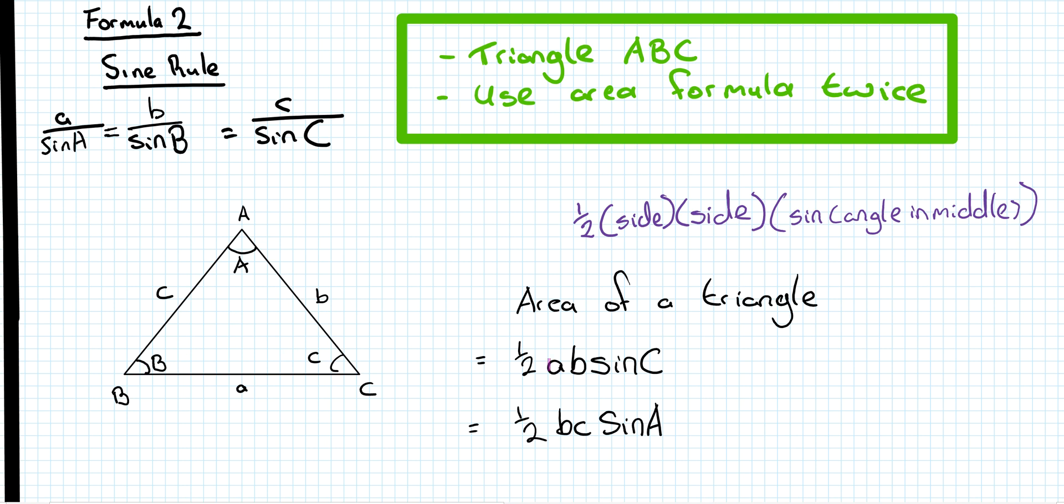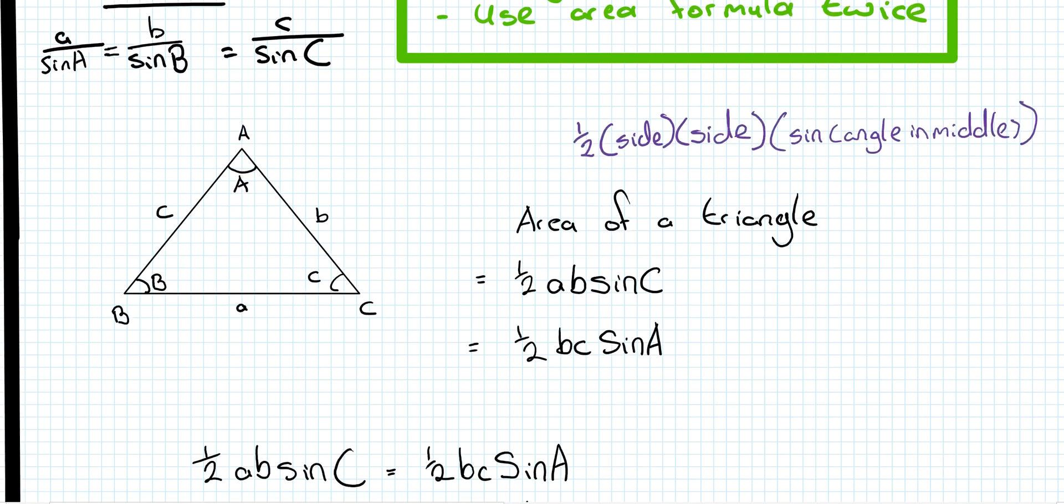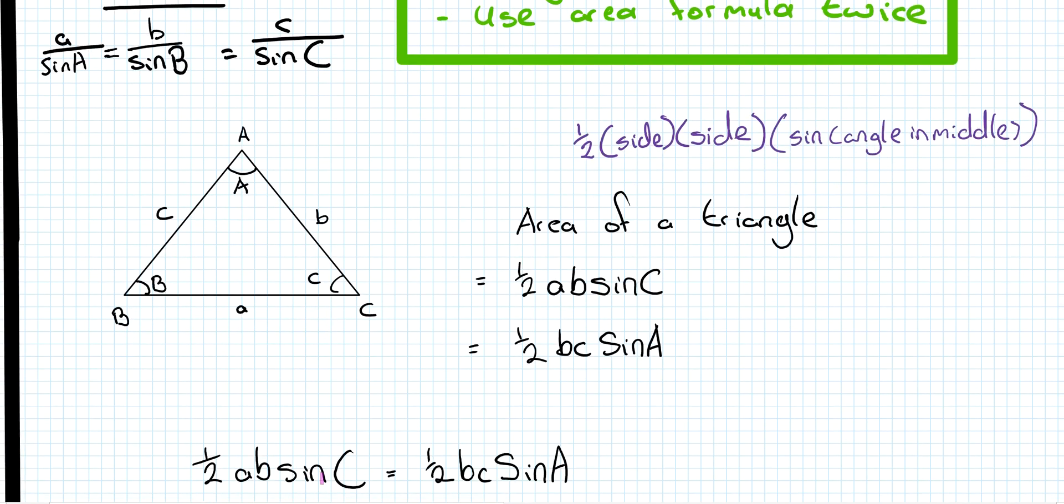You only have to do two of them. So I'm doing a half AB sine C and a half BC sine A. But it's the same triangle, so the area must be equal. So a half AB sine C must equal a half BC sine A.